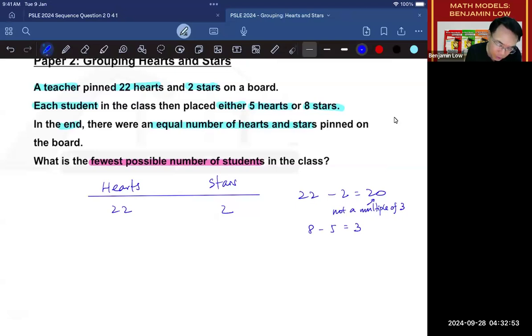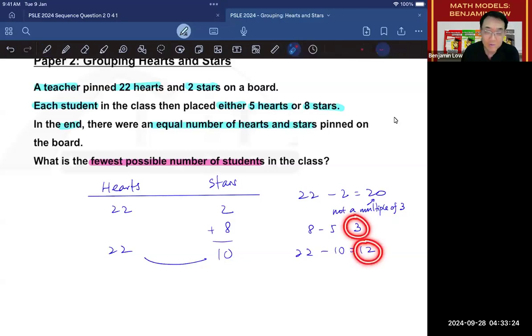So now we know that it has to be probably an extra student putting stars. And if this extra student were to put stars, then now I would have 10 stars. And the hearts is still 22 because nobody came up to put hearts. And now if I were to take 22 minus 10, I will now get 12 instead. And lo and behold, 12 is a multiple of 3. So now we kind of solve that problem.